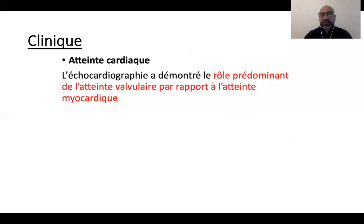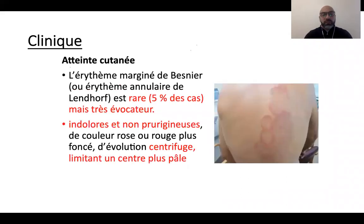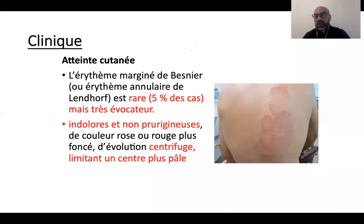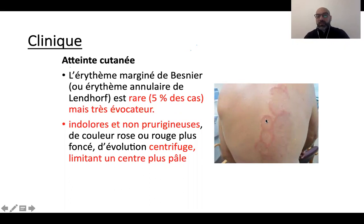L'atteinte cutanée, c'est l'érythème marginé de Besnier — aussi appelé érythème annulaire de Leiner-Moussous selon les appellations. Il est rare, touche 5% des cas, mais très évocateur : il y a un centre pâle avec une extrémité arrondie. Cela peut donner l'impression d'eczéma, mais ce n'est pas du tout prurigineux — c'est indolore, non douloureux. Ce sont des plaques arrondies avec un centre pâle, très évocatrices.